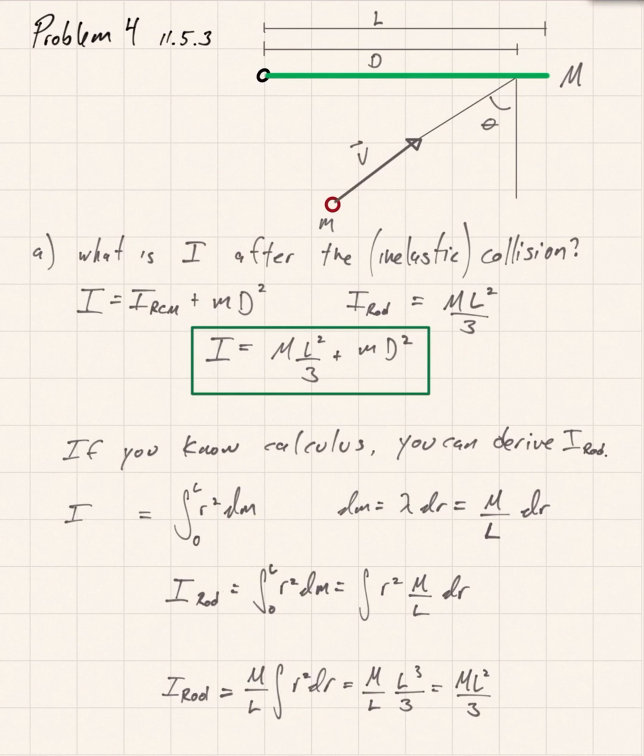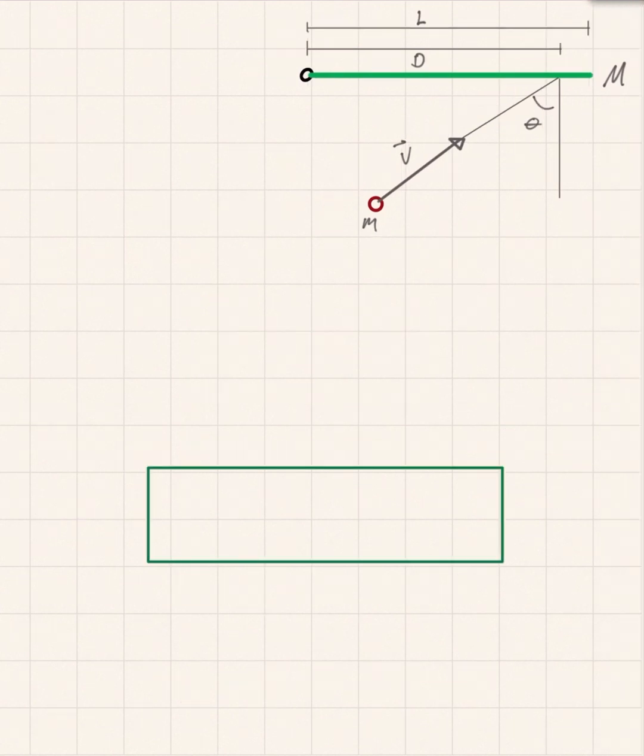There's a part b to this problem, and that is what is the angular speed of the bar after it has been struck by this mass? Well we know that angular momentum is equal to the moment of inertia times the angular speed. There we go, we know the moment of inertia and also we know that the angular momentum of the system is not changed.